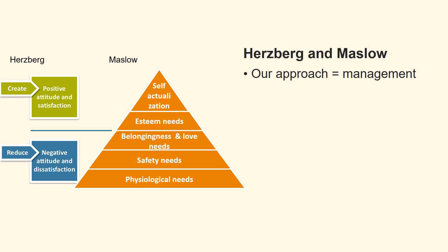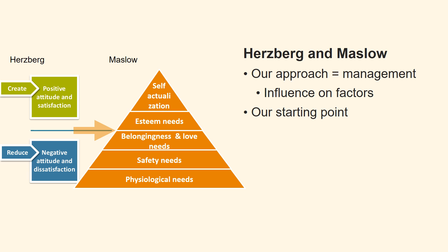Our approach is to look at this from a management point of view. As management, we have direct influence on the different factors in Herzberg's two-factor theory. The theory is about factors that affect the employee's work, while Maslow includes many other factors — not only factors from an employee's working life. Our starting point is therefore to see how Herzberg's two-factor theory affects Maslow's hierarchy of needs.